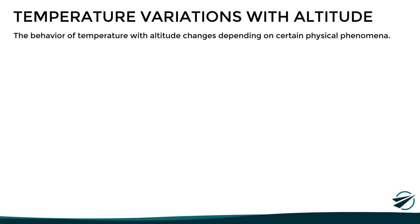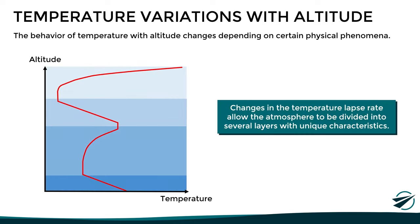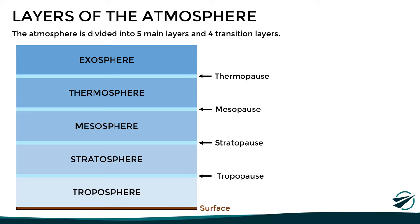In a previous video, where we talked about the composition of the atmosphere, we said that the behavior of air temperature with altitude changes throughout the atmosphere depending on certain physical phenomena. Those changes in the temperature lapse rate allow the atmosphere to be divided into several layers, each one with unique characteristics. We can divide the atmosphere vertically into five main layers and four transition layers, as we can see here.